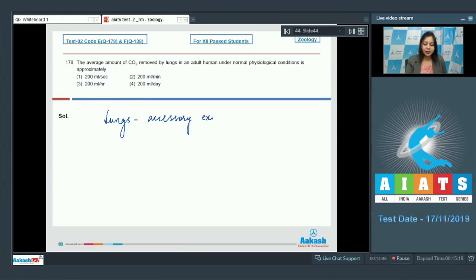Lungs act as accessory excretory organs and eliminate about 200 ml of carbon dioxide per minute. So the correct answer becomes option number two. Let us see the next question.